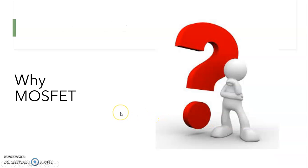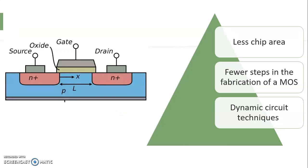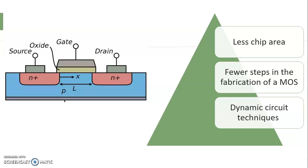The key component of VLSI is the MOSFET — Metal Oxide Semiconductor Field Effect Transistor. In your previous semester, you must have studied BJT, JFET, and MOSFET. MOSFET is used in VLSI because it needs less chip area, fewer steps in fabrication, and with dynamic circuit techniques, the size of the circuit can be reduced, giving power improvement as well.